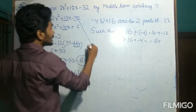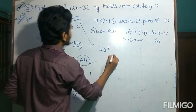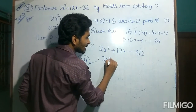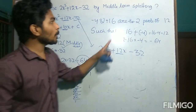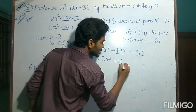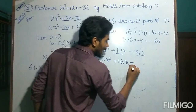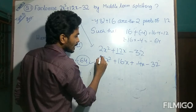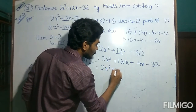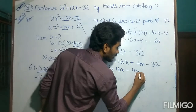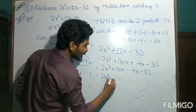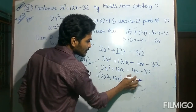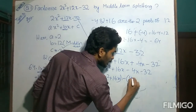So this quadratic polynomial can now be written as 2x squared plus 12x minus 32, where 12 has been split into 16 and minus 4. Writing the larger number first: 2x squared plus 16x plus minus 4x minus 32. Now putting brackets over the first two terms and brackets over the second two terms. Here again a negative sign comes, so minus sign is taken as common, giving 4x plus 32.